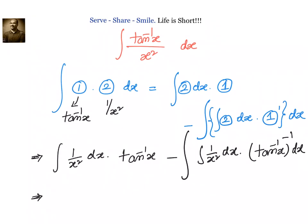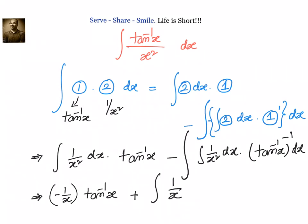Let us simplify that. The integral of 1 by x square is minus 1 by x, because x square is x power minus 2 and by the formula integral of x power n is x power n plus 1 by n plus 1. So we get minus 1 by x into tan inverse x, minus the integral of minus 1 by x multiplied by the derivative of tan inverse x, which is 1 by 1 plus x square. So we now need to find the integral of 1 by x into 1 plus x square dx.